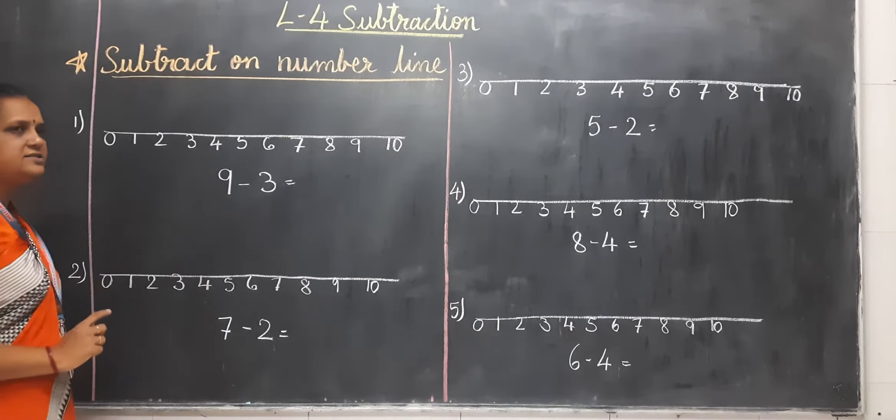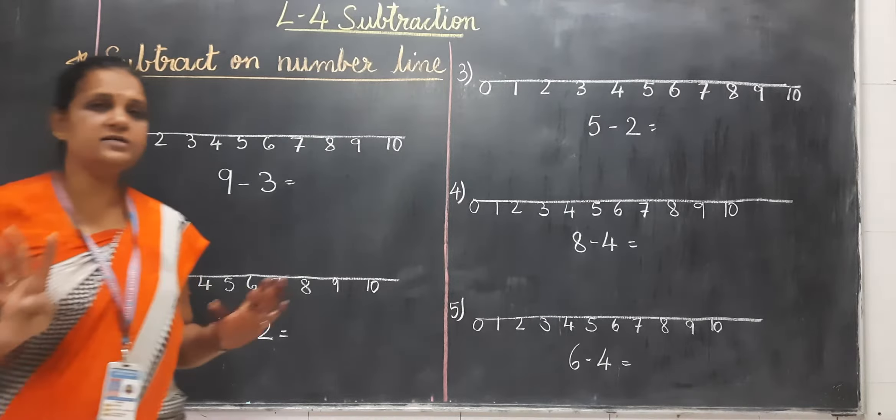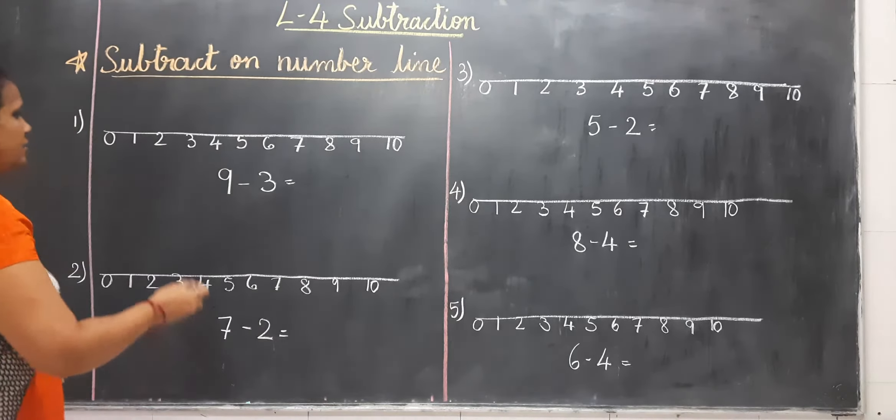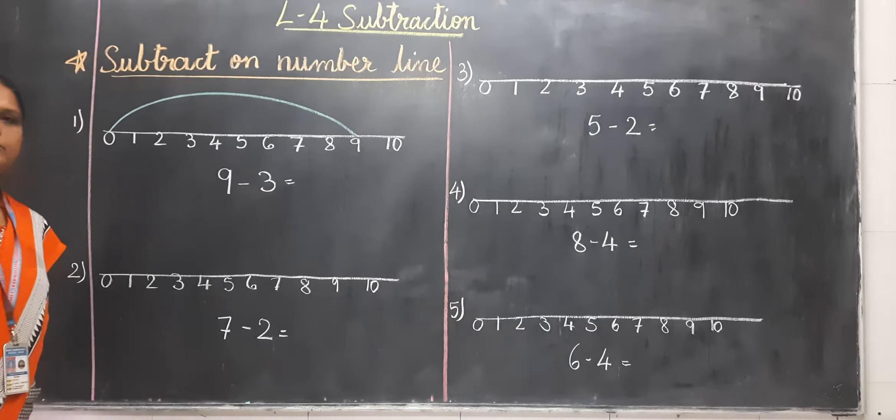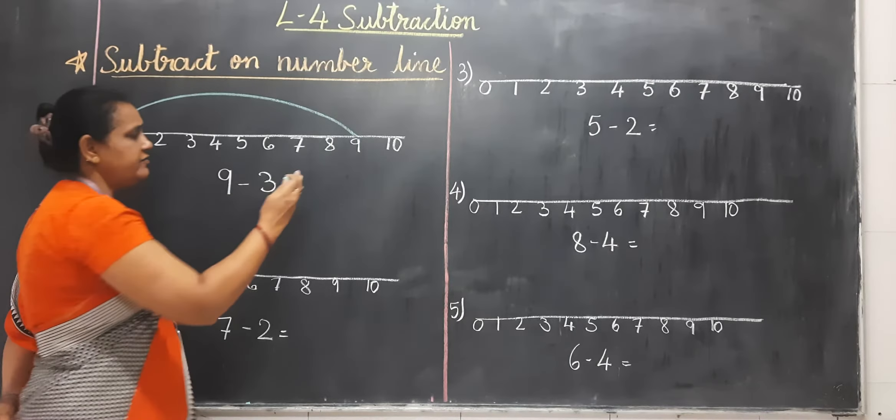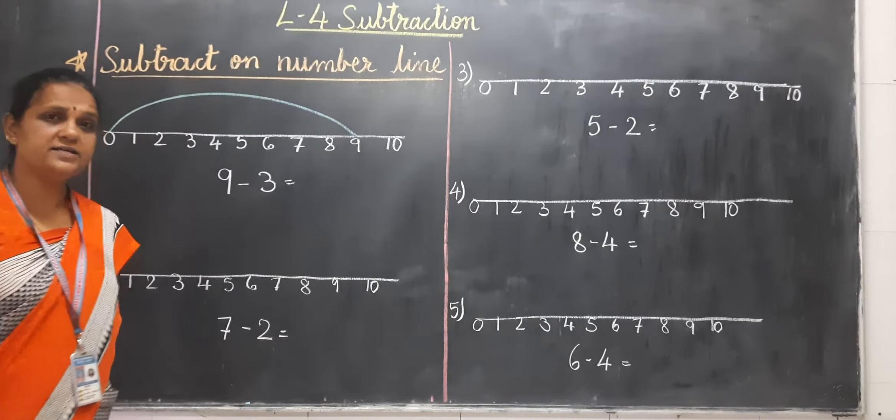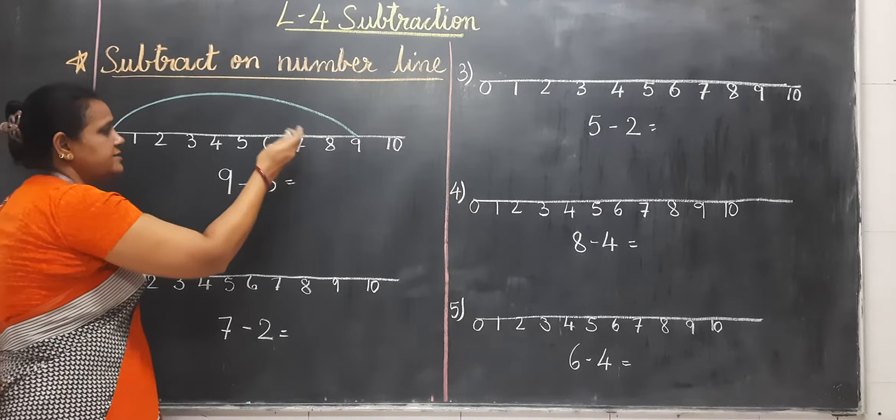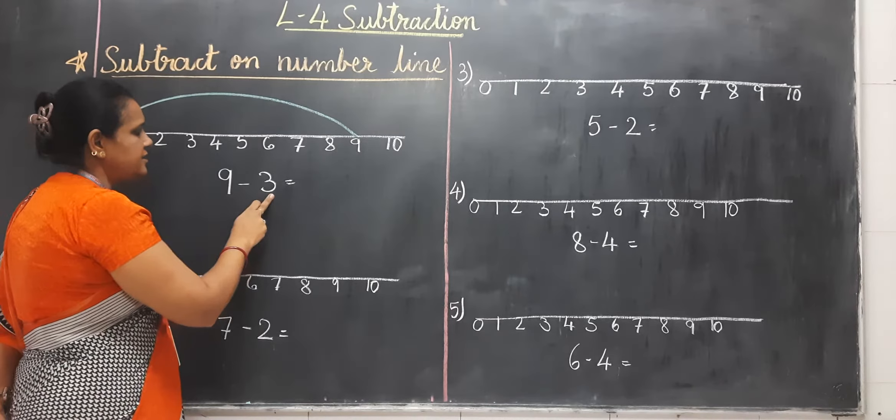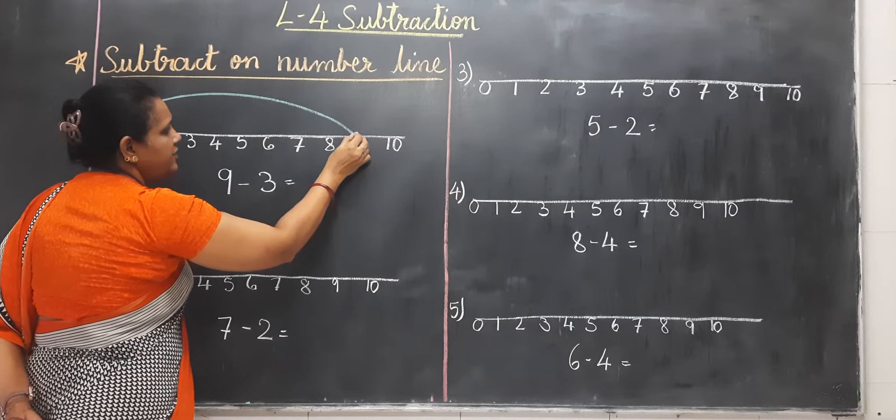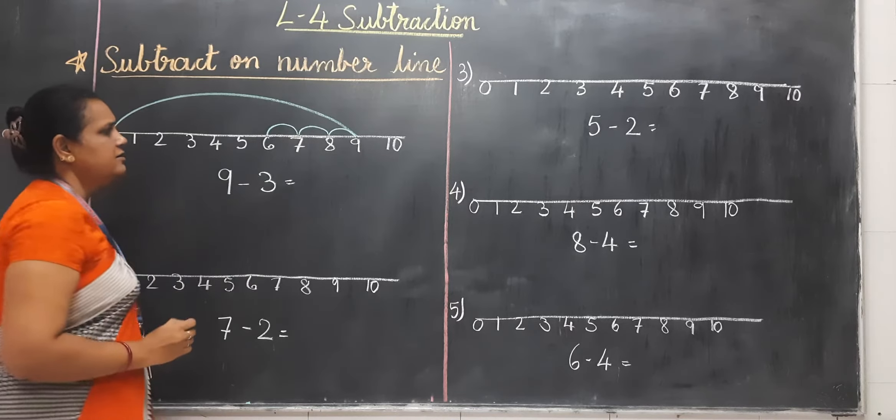Now, which number is this? 9 minus 3. We have to do 9 minus 3. So how to do it? From 0 to 9. But in Subtraction we have to go inside. We have to make a small semicircle inside, minus 3. So from 9 we have to go 1, 2, and 3.